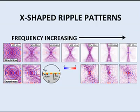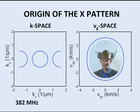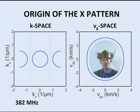Now let's analyse the sound wavelengths and the sound speeds in these images. There are two important spaces called k-space and group velocity space. For a given frequency in k-space, we plot the inverse of the wavelength, or rather the wave number, in the X and Y directions.